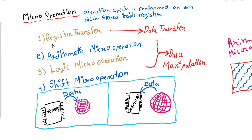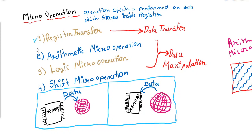Register Transfer Micro operation helps us to transfer the data from one place to another. It can be register to register, memory to register, or register to memory. So normally, register transfer helps us to transfer data between memory and registers, meaning it helps us to perform input/output operations.